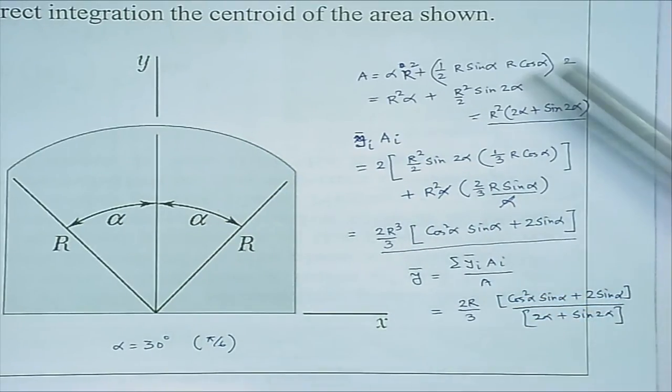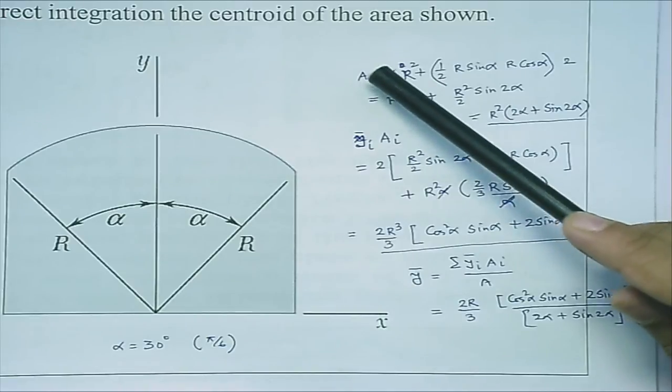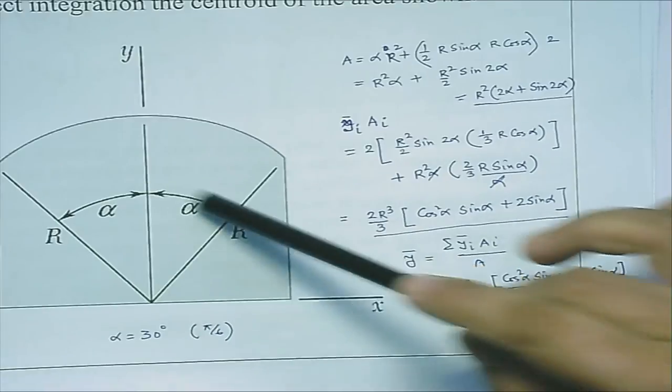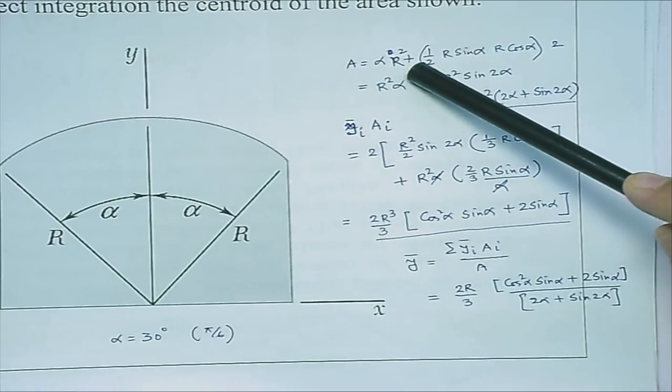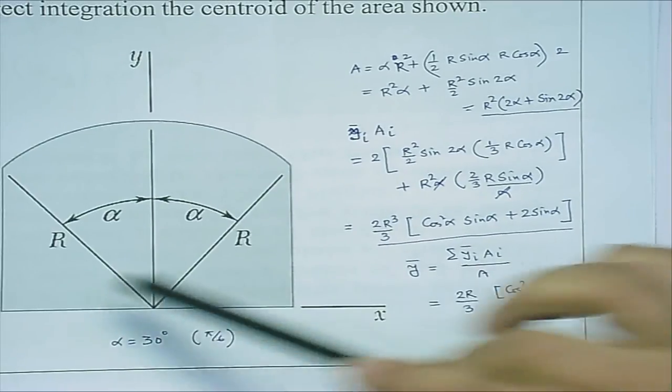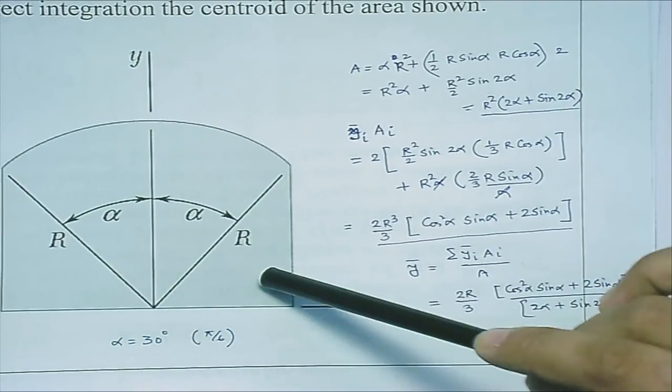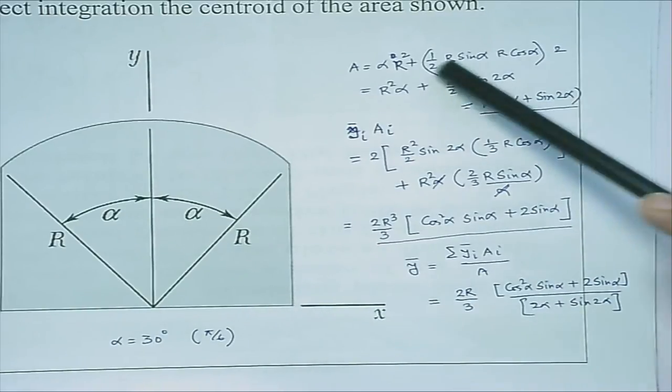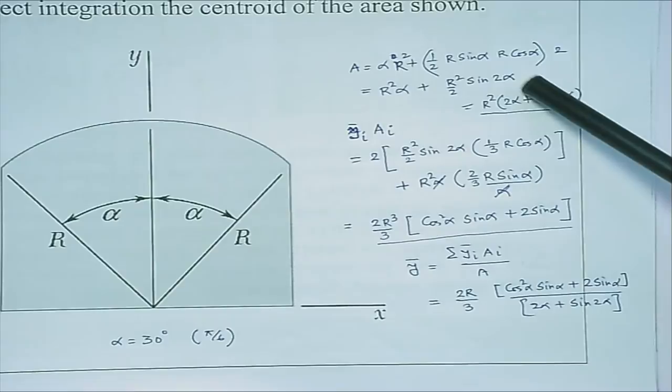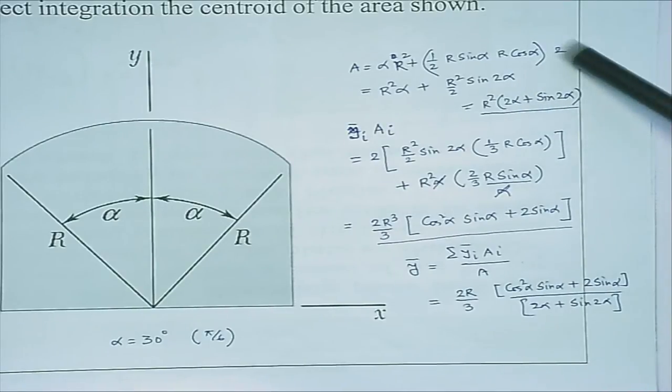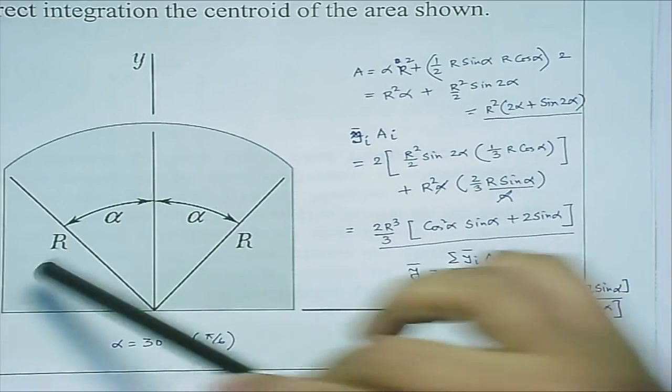Remember I know the solution for the total area now. As you can see for the sector the solution is alpha r square, that is the area, and then for the triangular part you can also get the area in terms of r and alpha, which is written here: half r sin alpha multiplied by r cosine alpha multiplied by 2. You have 2 areas here.